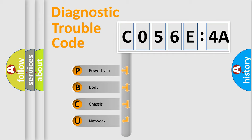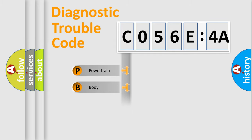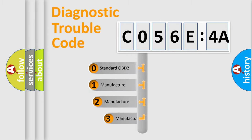We divide the electric system of the automobile into four basic units: Powertrain, Body, Chassis, and Network. This distribution is defined in the first character code.